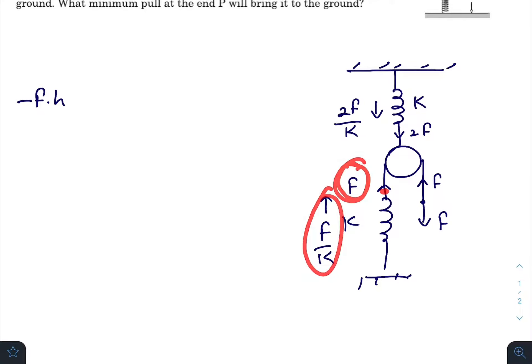F times displacement, so F into F by k. Similarly for this force, the displacement is this one, so 2F into 2F by k. The whole work done, as all these forces were internal forces, so the total work done will be zero. From here we'll get minus h plus 5F by k